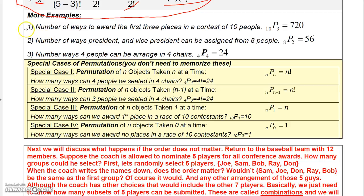Here's another example. Number of ways to award the first three places in a contest of ten people. That would be a permutation, 10P3. Number of ways president and vice president can be assigned from eight people. I just covered that. Number of ways four people can be arranged in four chairs. That would be 4P4, because we're arranging all four.